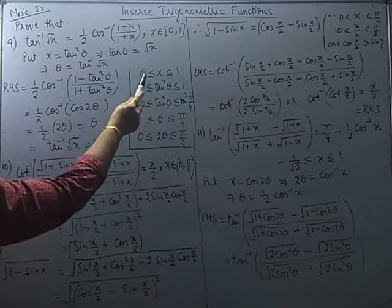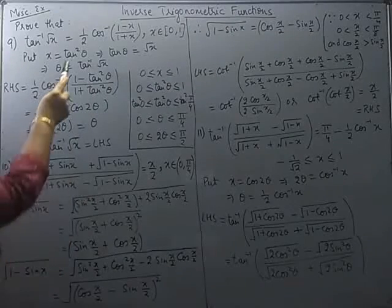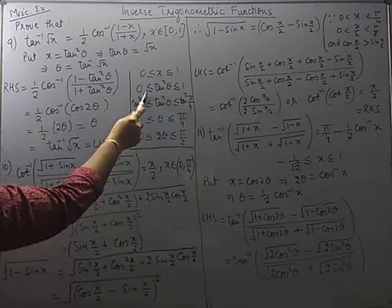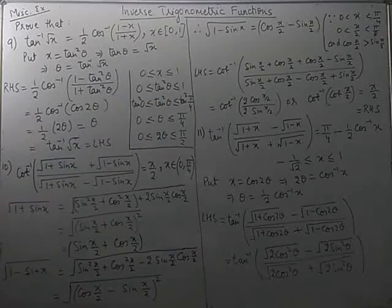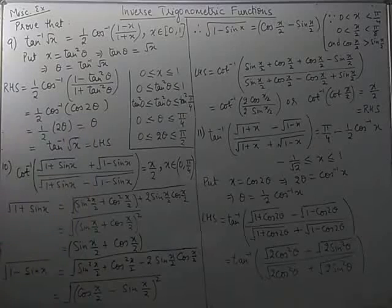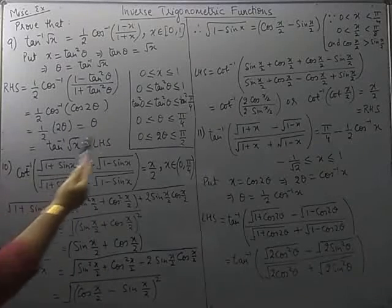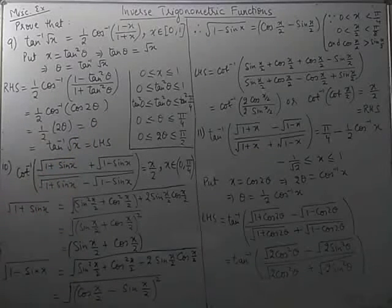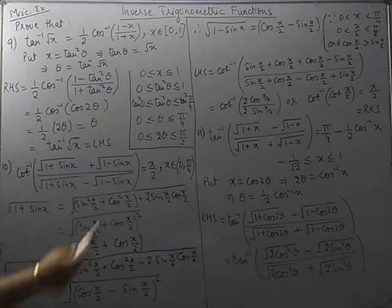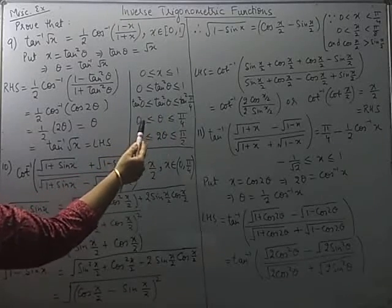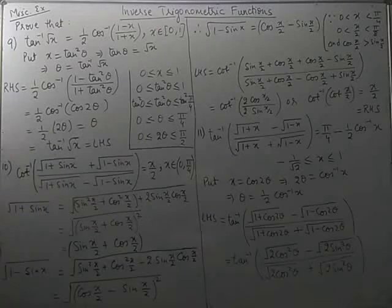We know x is between 0 and 1, and x equals tan²θ. So tan²θ is between 0 and 1. Now 1 can be written as tan(π/4), or equivalently as the square of tan(π/4), and 0 can be written as the square of tan 0. That means θ is an angle which is between 0 and π/4.